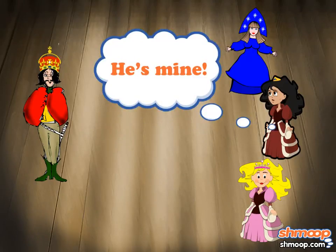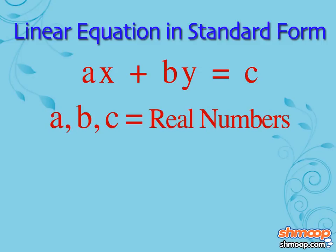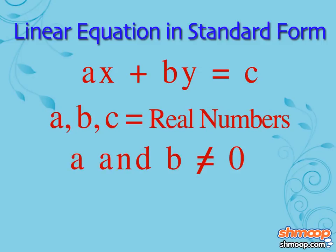A linear equation in standard form is an equation that looks like this: Ax plus By equals C, where A, B, and C are real numbers, and A and B aren't both zero. C can be zero if it wants.